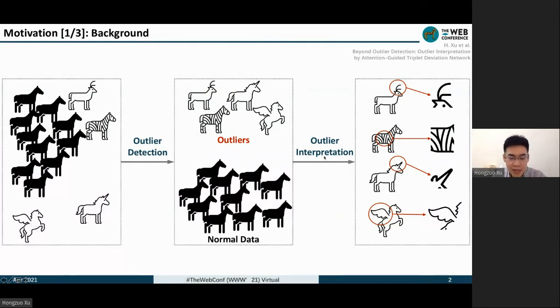Outlier Interpretation is an important complementary task. It investigates what distinguishes the acquired outlier from the given data set and how to characterize it. We need to find the antler of the deer, the stripes of the zebra, the horn of the unicorn, and the wings of the pegasus.